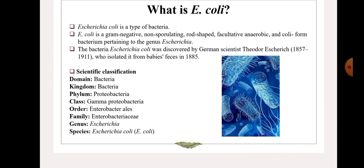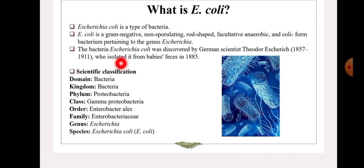Firstly, what is E. coli? E. coli is basically a bacteria. We all know that bacteria are prokaryotic organisms, so E. coli is a type of bacteria. E. coli is a gram negative, non-sporulating, rod-shaped bacteria. It is a facultative anaerobic — facultative anaerobic organisms are those which can survive in both oxygenated and deoxygenated environments — and a coliform bacterium pertaining to the genus Escherichia. The bacterium Escherichia coli was discovered by German scientist Theodor Escherich in 1857 to 1912; E. coli was first discovered in 1885.